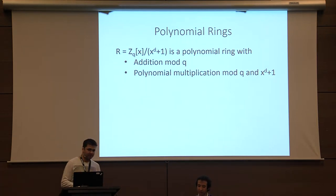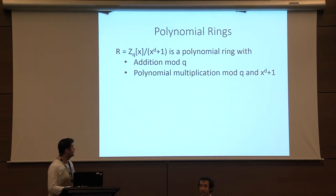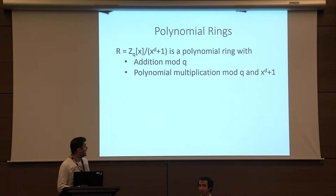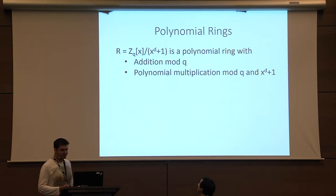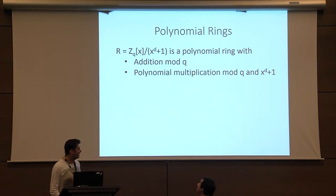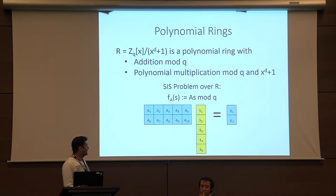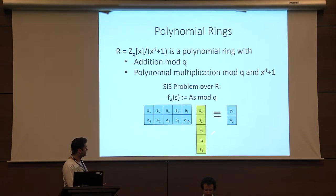Now I want to move from matrices over the integers to polynomial rings — it's a bit more efficient and our results mostly apply to them. I'll define the polynomial ring R as Z_q[X] mod (X^d + 1), a polynomial ring where addition is modulo q and multiplication is reduced mod q and also mod X^d + 1. If you've seen ideal lattices, we always work with rings like that. Rewriting the SIS problem over ring R: instead of integers, the matrix entries are elements in the ring — just polynomials. Given A and T with f_A(S) = T, I want to prove I know small polynomials with small coefficients such that A times S equals T.